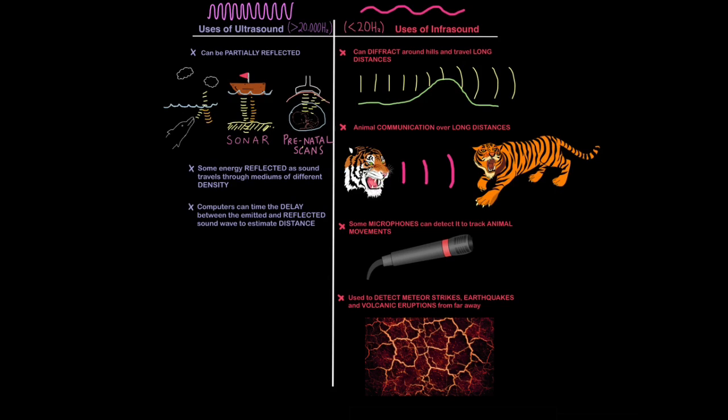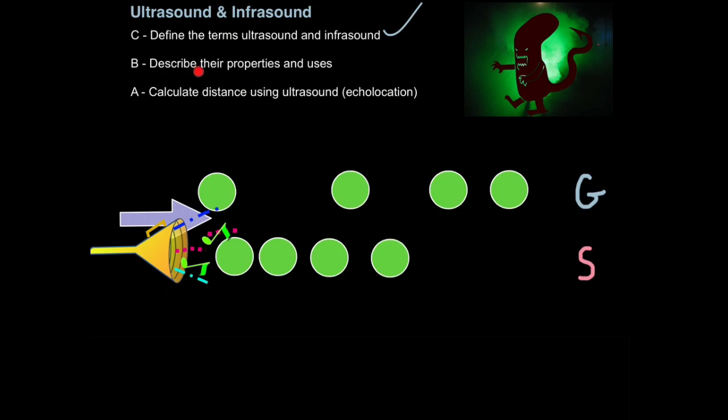To summarize: ultrasound above 20,000 hertz can be partially reflected and therefore used for echolocation to estimate distance of certain objects. They are partially reflected when they go through mediums of different density. Infrasound below 20 hertz has a much longer wavelength and therefore can travel very long distances. Even hills don't stop them because they diffract around hills. Certain animals use infrasound to mark their territory, and we can use infrasound to detect potential natural hazards such as earthquakes and meteor strikes.